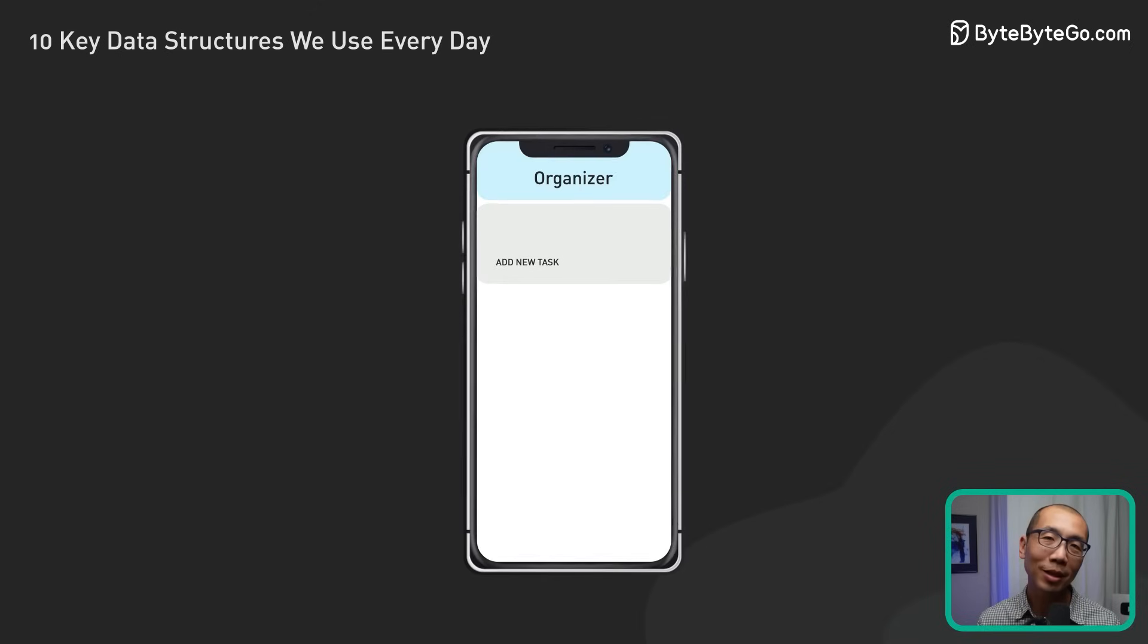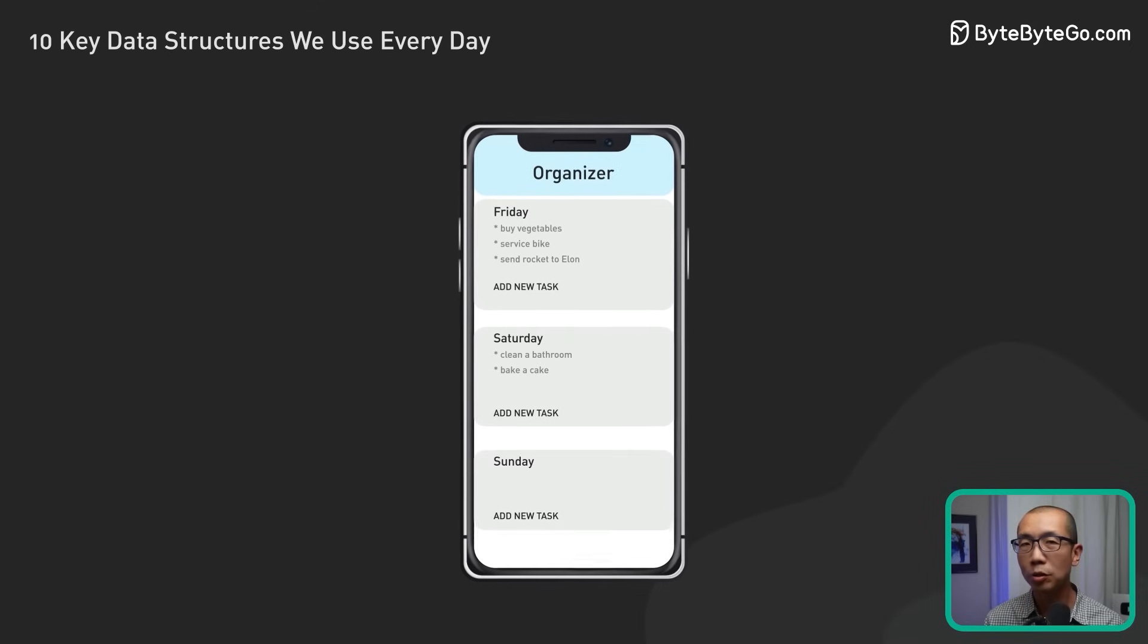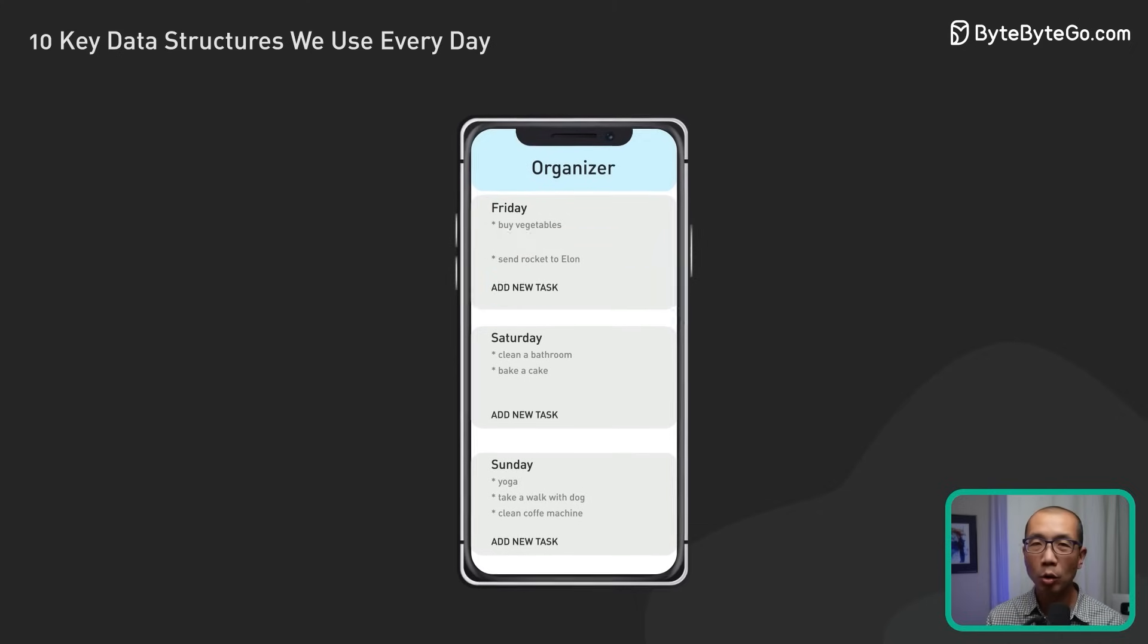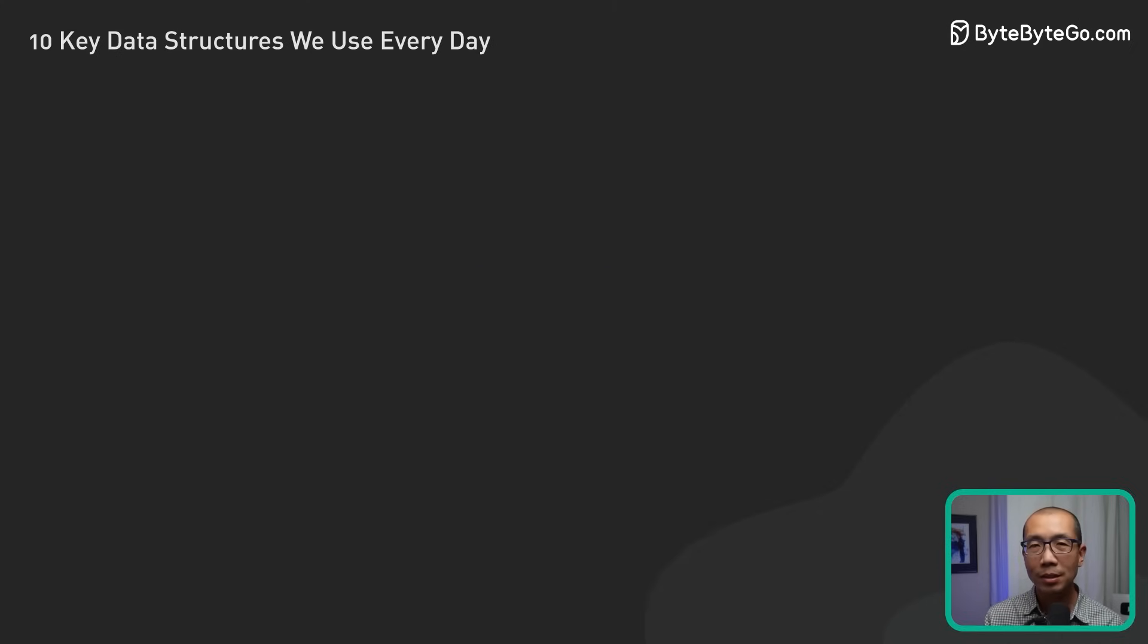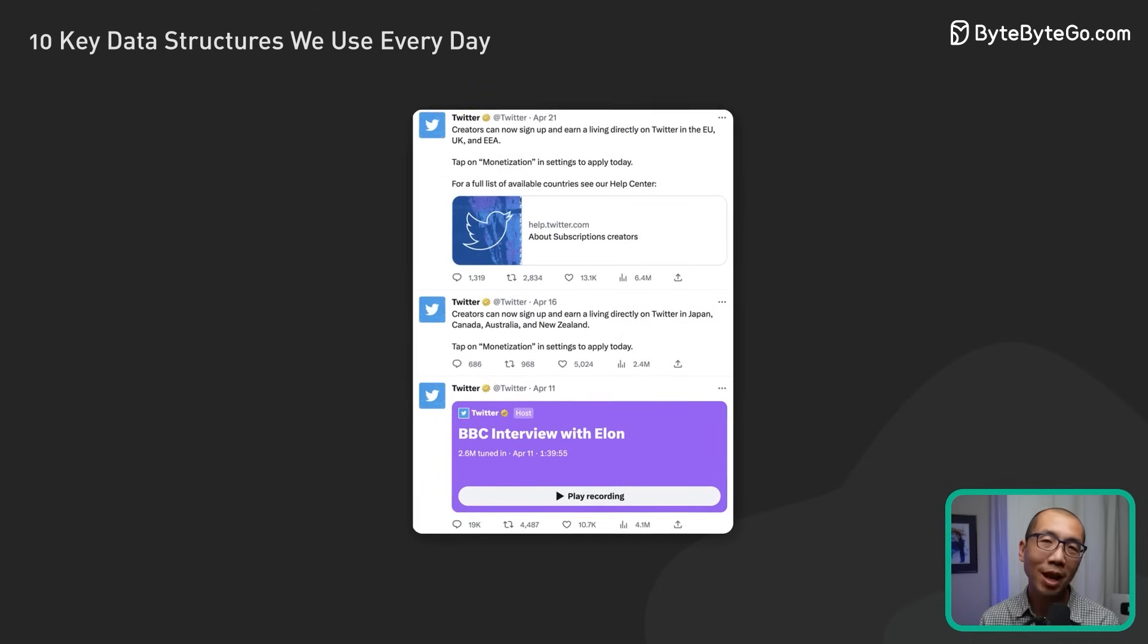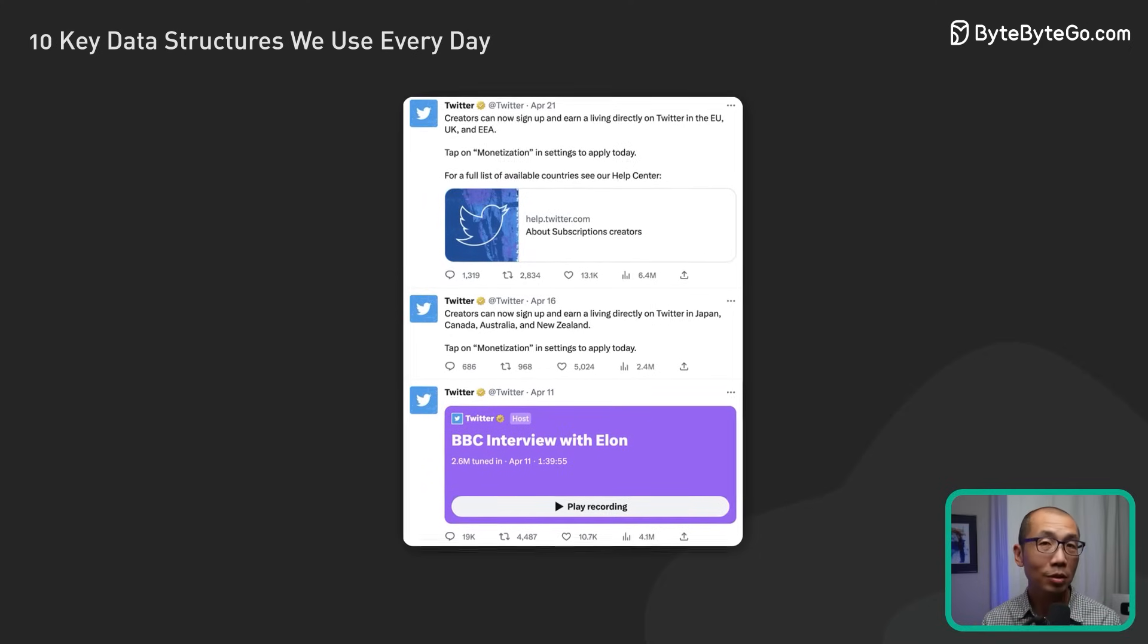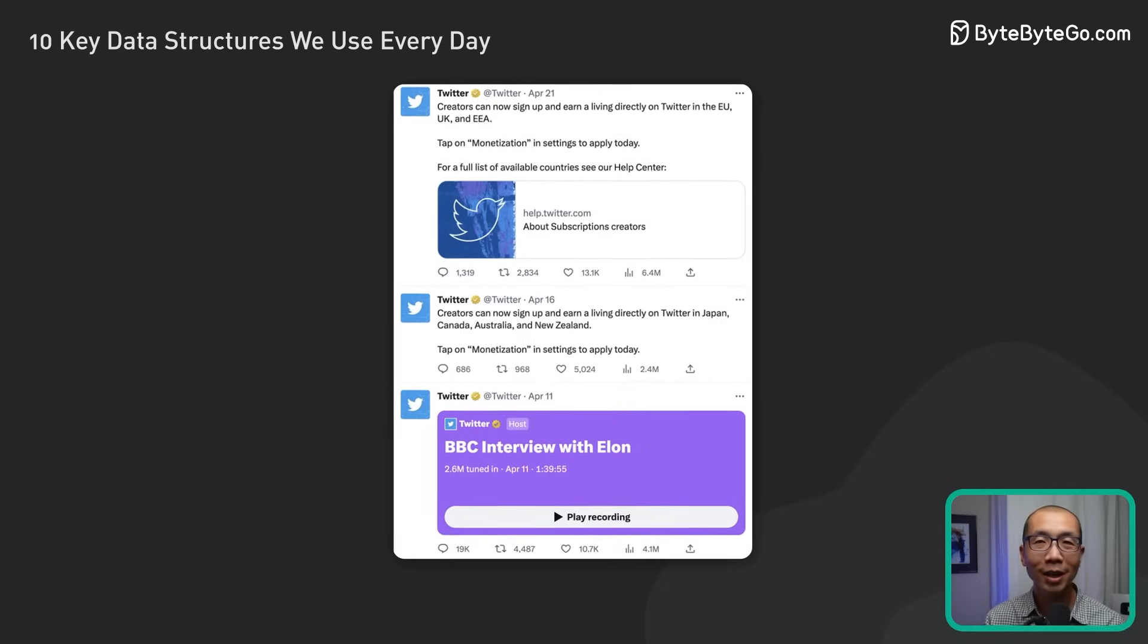In a task management application, a list can be used to store and organize tasks for each user. Tasks can be added, removed, or reordered easily, and users can mark them as complete as needed. Lists are also useful in social media applications like Twitter, where they can store and display a user's feed in real-time, ensuring the latest content is shown in the correct order.